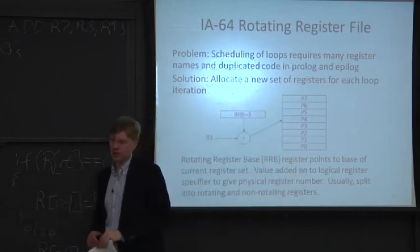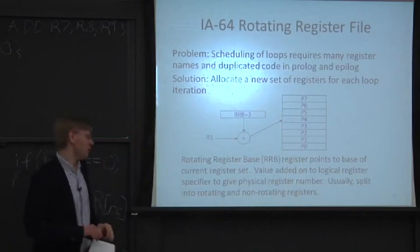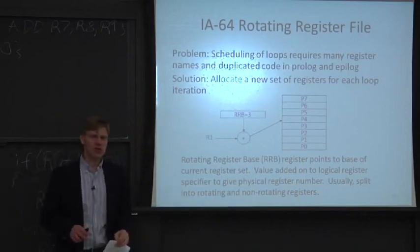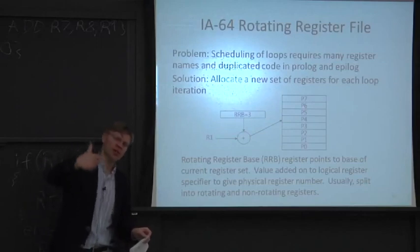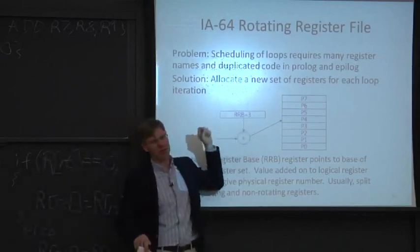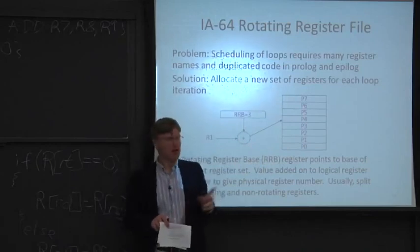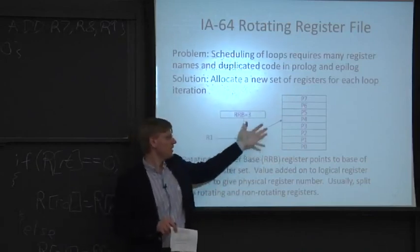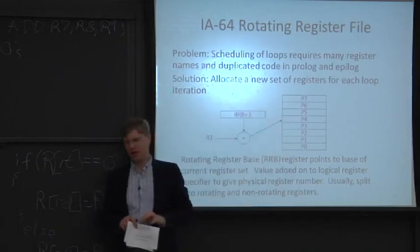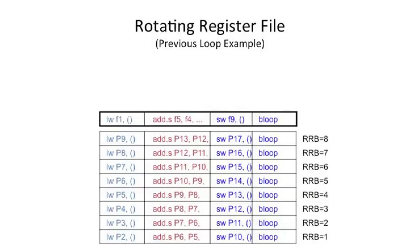The RRB uses modulo arithmetic so it rolls around at the end, pointing to different locations in the physical register file. Every new loop iteration, we change the RRB and it points to a different set of registers. We can effectively software pipeline just by using this one feature.